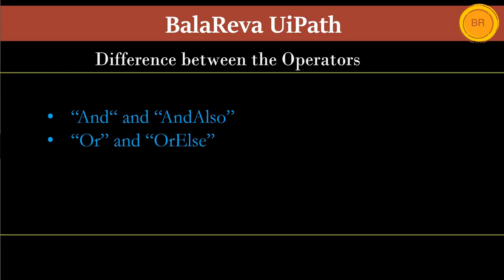Today we are going to see what is the difference between AND and AND ALSO, and also OR and OR ELSE. First we are going to look at AND and AND ALSO.